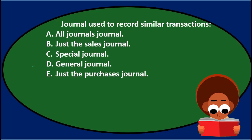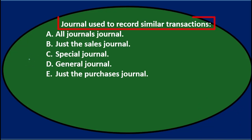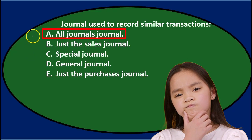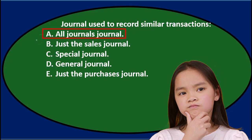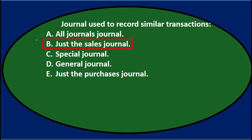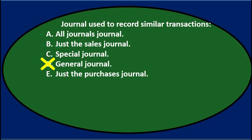Using process of elimination: A — all journals journal — I'm not sure that's a real term, so I'll keep it for now. B — just the sales journal — the word 'just' qualifies it, so I'll keep it for now. C — special journal — that sounds familiar for recording transactions of this type, so I'll keep it. D — general journal — that's like our general ledger journal, and it doesn't really record only similar transactions, so I'll eliminate D.